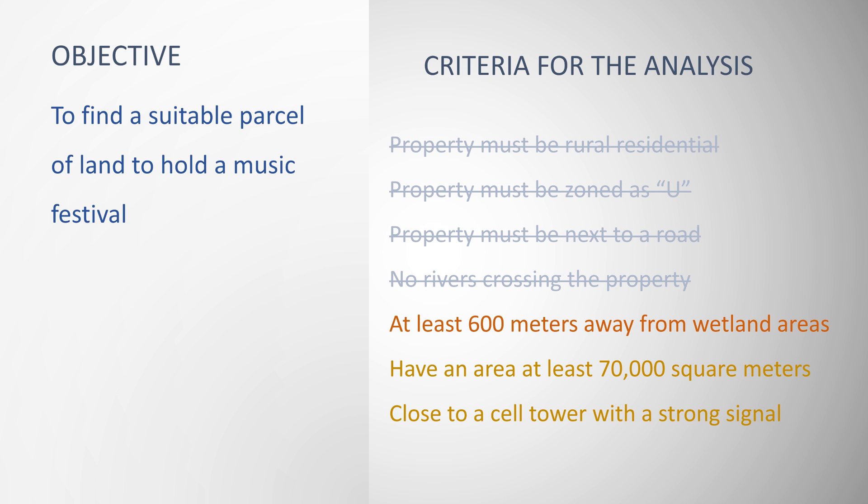To do this, I will start by clipping the wetlands layer to the Humboldt County boundary. Then I will create a 600 meter buffer around the wetlands. Finally, I will use the wetlands buffer to erase these unwanted areas from the properties.